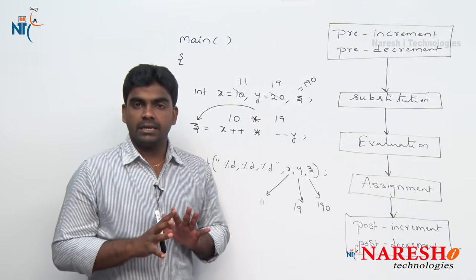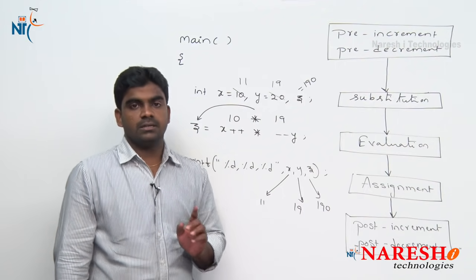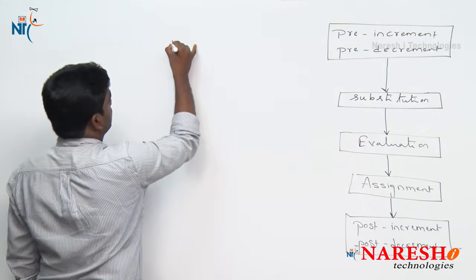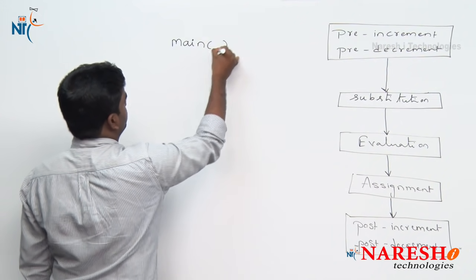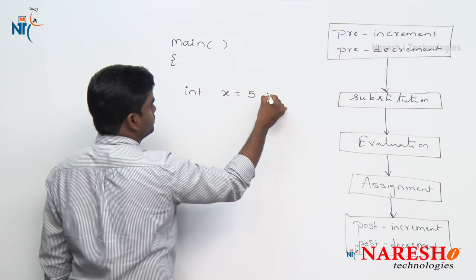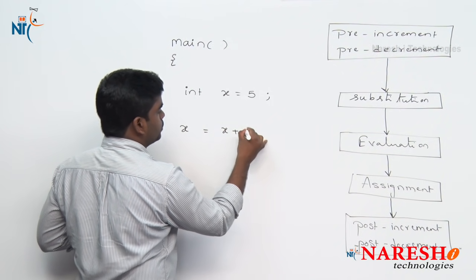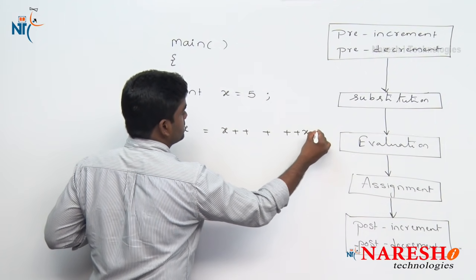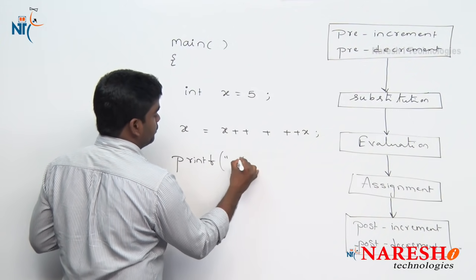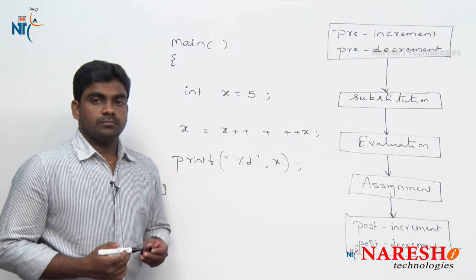Please do not get any confusion. If you take one expression which contains increment and decrement operators, just follow these 5 steps. Next example: only one variable. In main, int x = 5. The expression is: x = x++ + ++x. And we are printing the x value in the next statement.